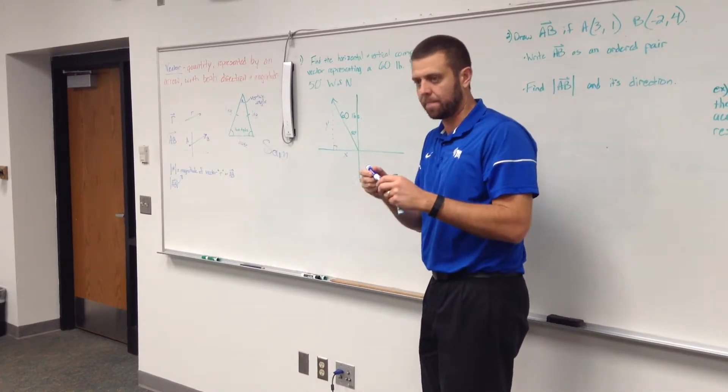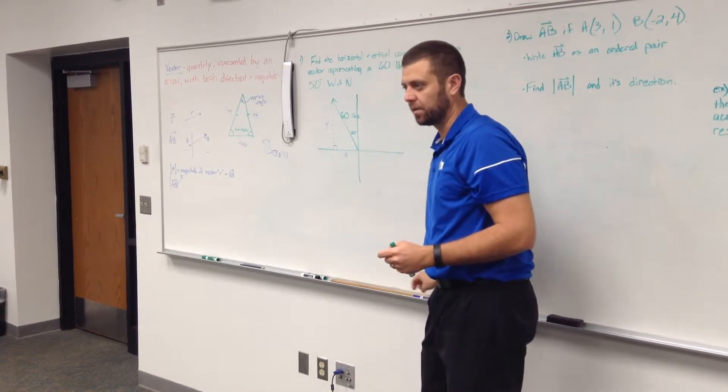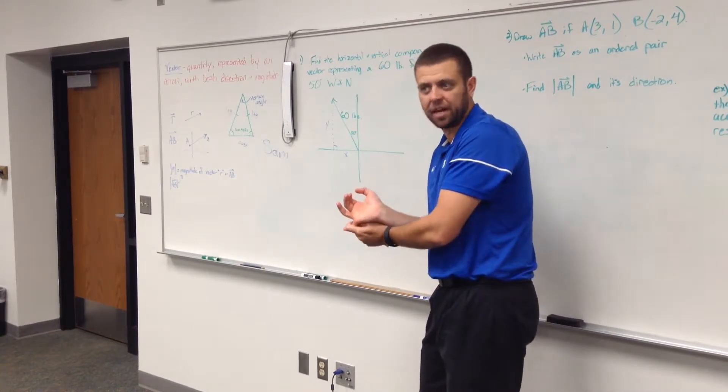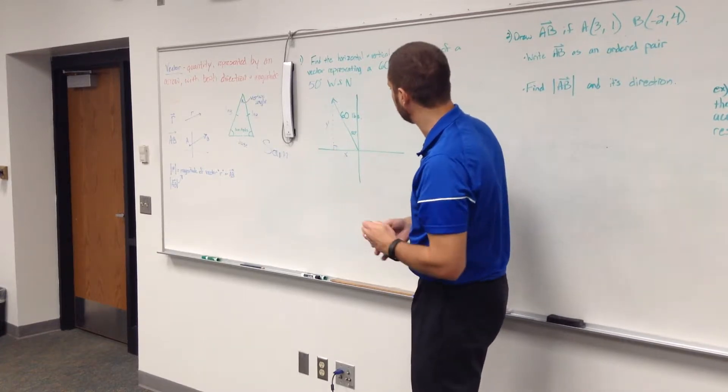Or my x and my y. The nice thing about this is it's a right triangle, so I can use sine of an angle equals opposite over hypotenuse, cosine equals adjacent over hypotenuse, and so on.